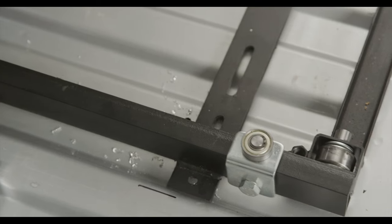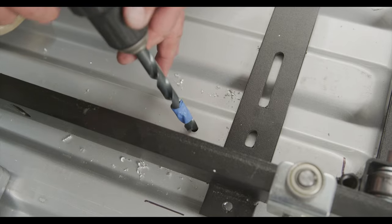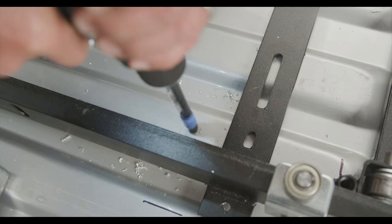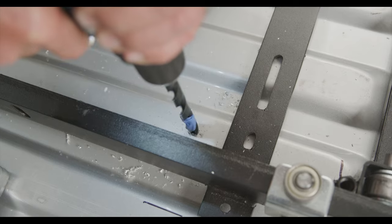Once you have drilled all of your pilot holes, move the mounting frame to the side and grab your half inch drill bit. Drill out your pilot holes to their full diameter.